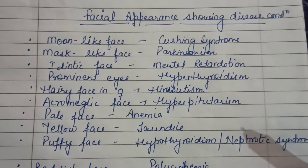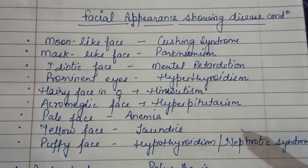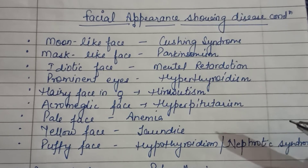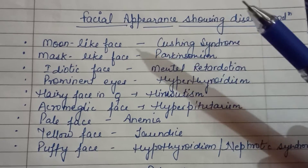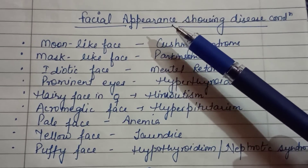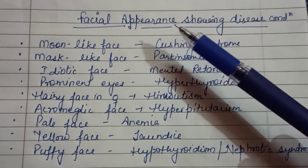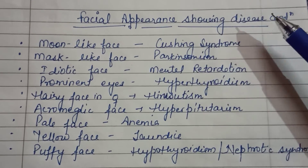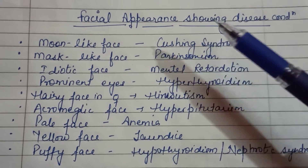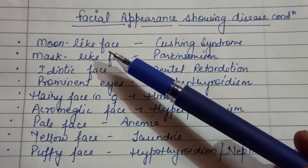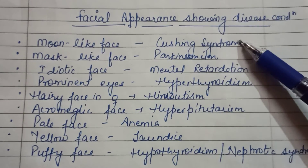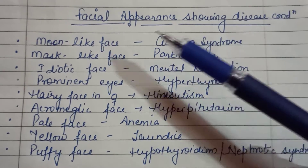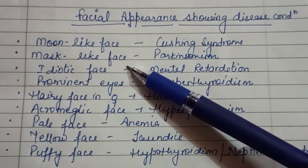Hello students, welcome to my YouTube channel. In this video we will learn some of the facial appearances that represent disease conditions. The moon-like face is seen in Cushing's syndrome, and the mask-like face is seen in Parkinsonism.